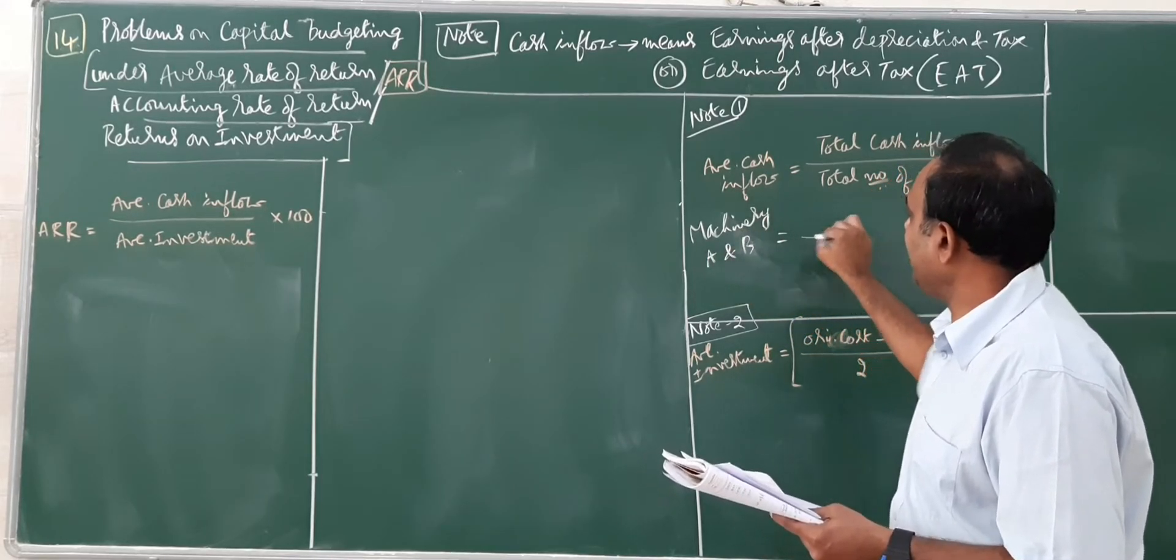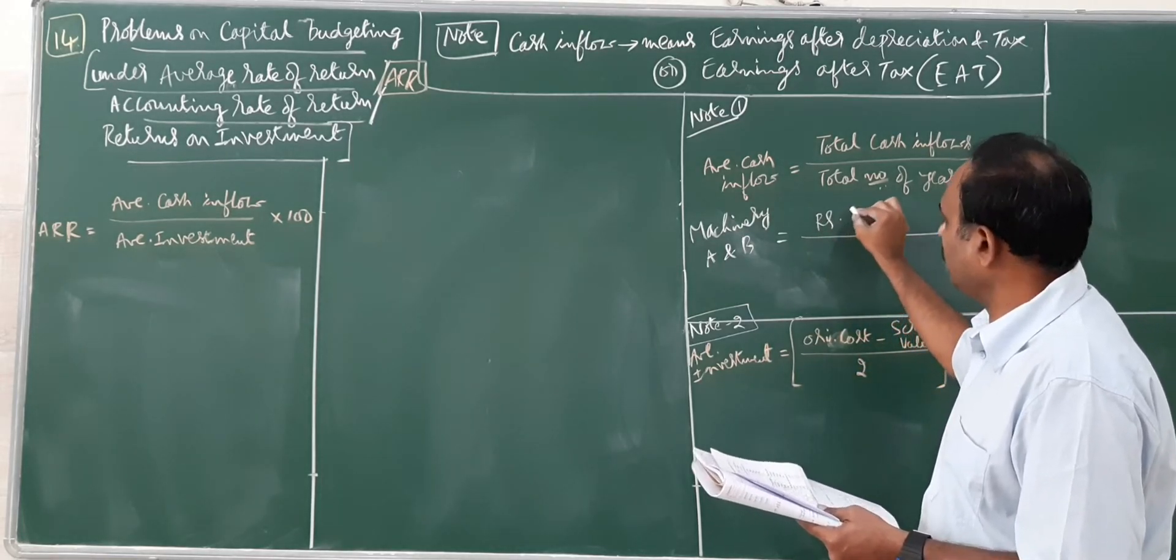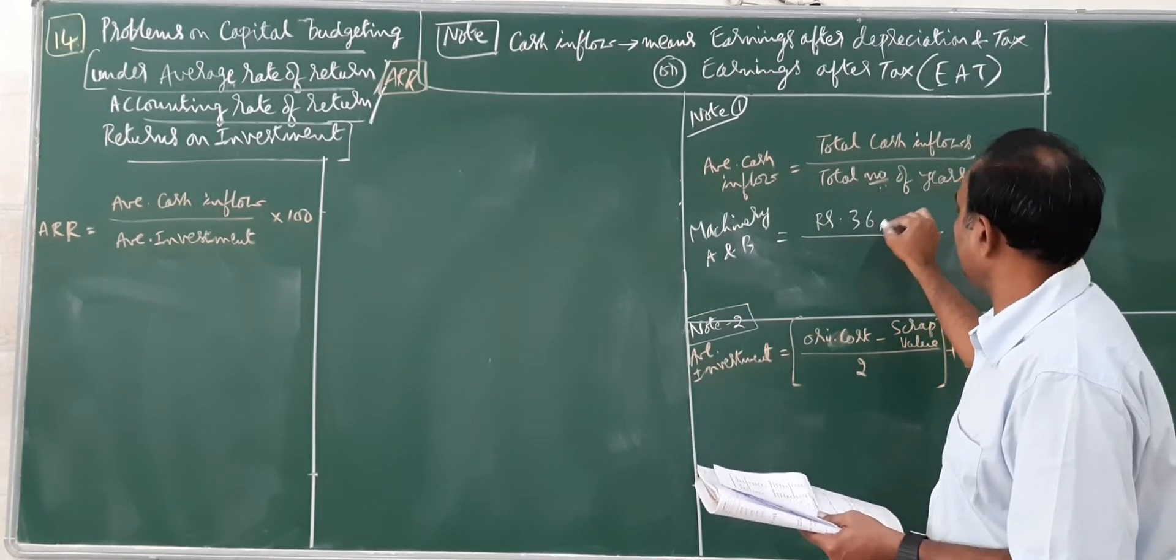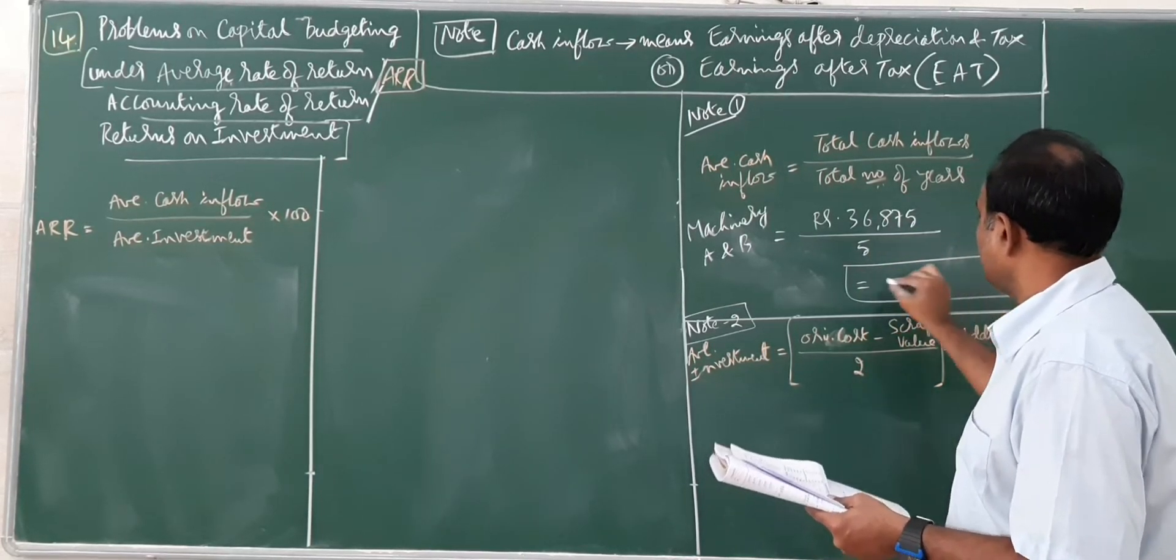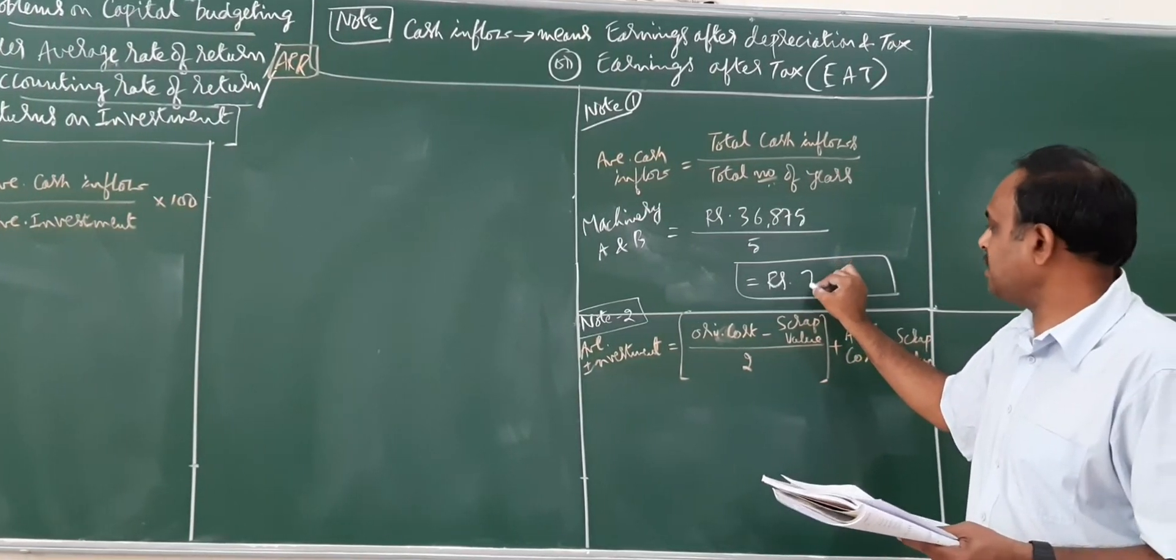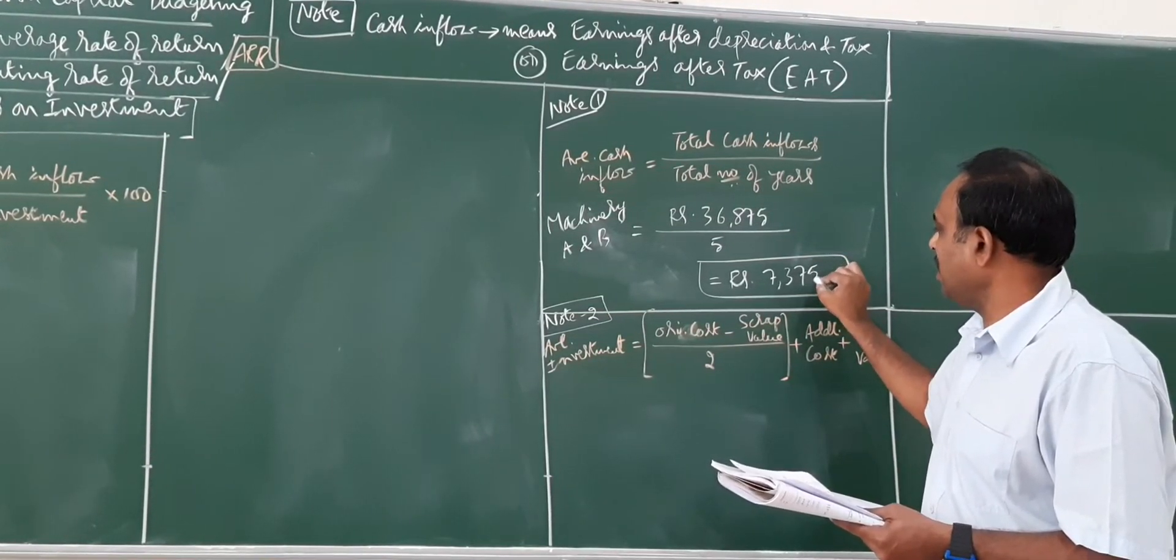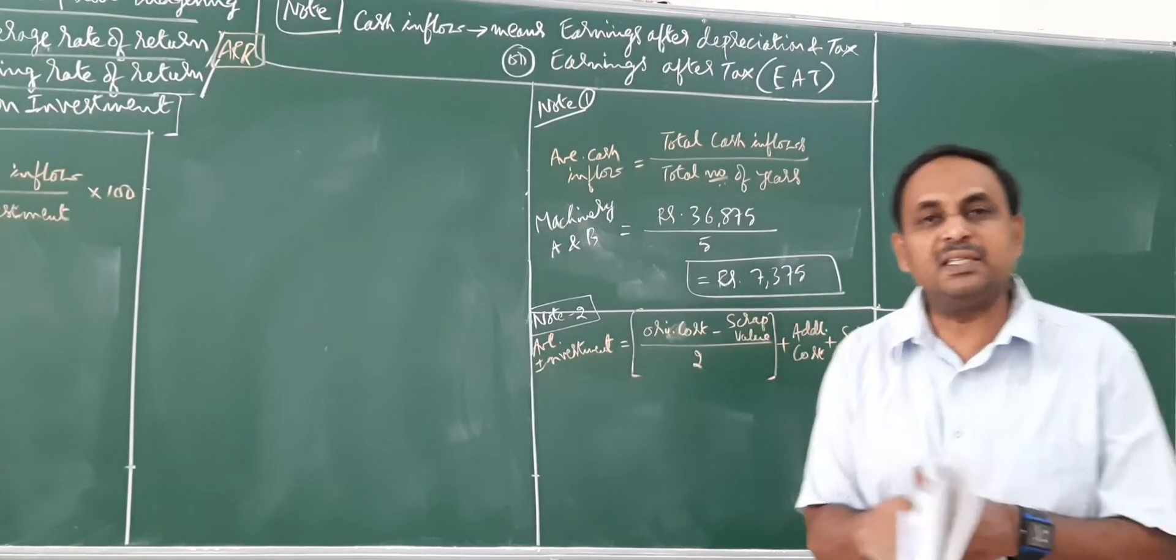If you add both for machinery A and B, the average cash inflow is same because the total cash inflow for both it is same, 36,875 divided by 5. So for both machinery A and B, average cash inflow is 7,375. So no need to calculate for B separately.